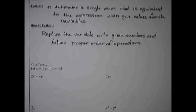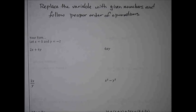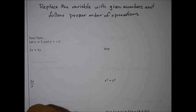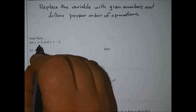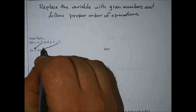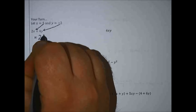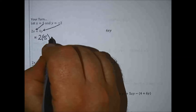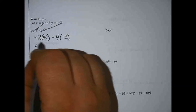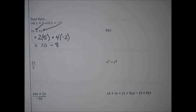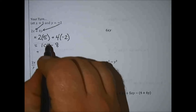Let's look at what that's going to look like when we actually try it. In all these problems below, we're going to let x equal 5 and y equal negative 2. All I want to do is put 5 in for x and negative 2 in for y. So I have two times x — but x is 5 — plus four times y — but y is negative 2. Two times 5 is 10, and four times negative 2 is negative 8, so we write that as minus 8.